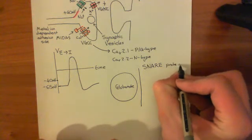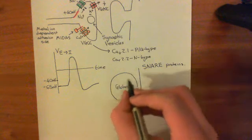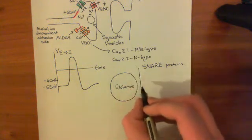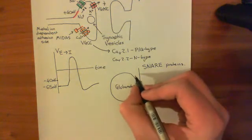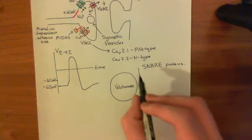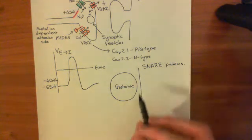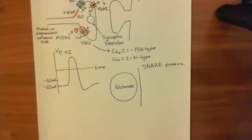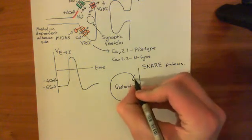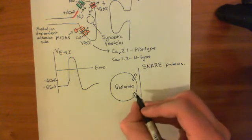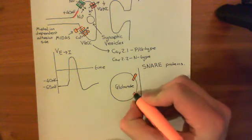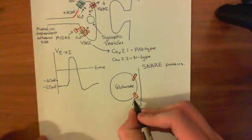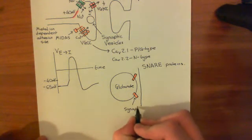There are two types of SNARE proteins: the V-SNAREs, which are within the vesicle membrane, and the T-SNAREs, which are attached to the presynaptic membrane. When a vesicle is attached to the cell membrane by SNARE proteins, the complex that docks it is known as the prefusion complex. The V-SNARE involved is called synaptobrevin, located in the membrane of the synaptic vesicle.